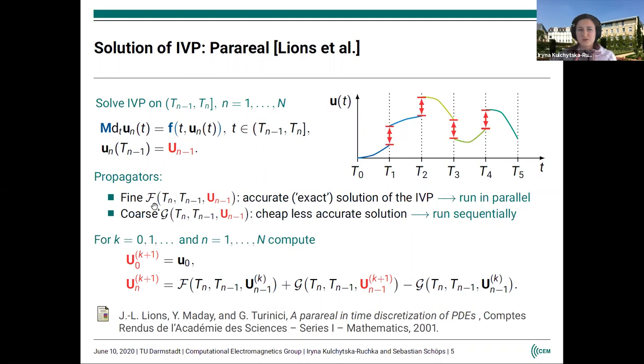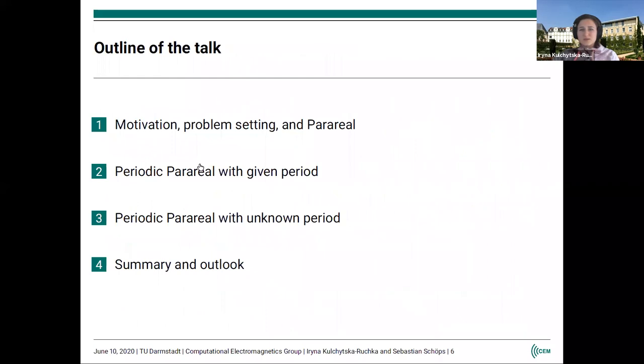We have two propagators, the coarse and fine, defining the coarse F and G. The fine is running in parallel and the coarse is executed sequentially. Then the Parareal update formula looks like this: the initial value is fixed because in this case we solve an initial value problem, and then the solution at the synchronization points is updated using this formula. So this was the first part of the talk with the motivation, problem setting, and brief recalling of Parareal.